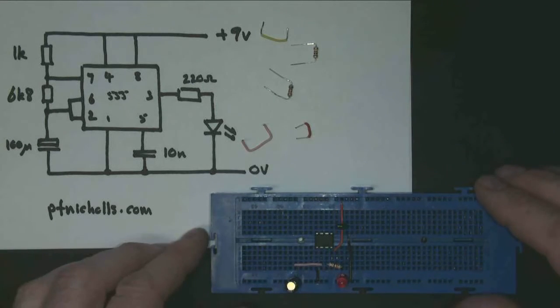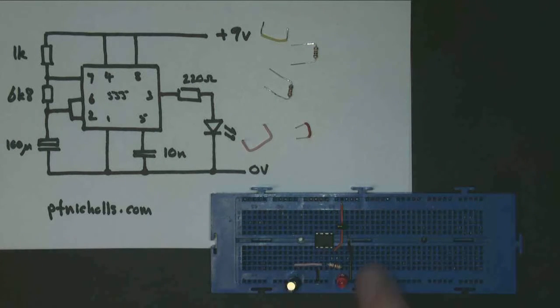Notice here how I'm being very strict. I'm using black for anything connected to ground, and red for anything connected to positive, and I'm using anything other than red, so in this case pink, for internal connections.